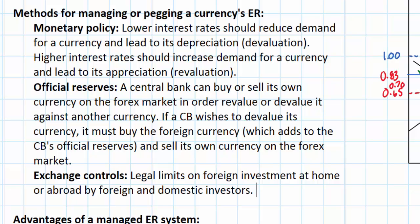By limiting investment in China, upward pressure on the value of the Chinese Yuan has been somewhat minimized. On the other hand, if a government wanted to keep its currency strong, it might limit the amount of investment done by domestic investors abroad. Large amounts of domestic investment abroad would increase demand for foreign currencies, reduce demand for the domestic currency, and increase the supply of the domestic currency in forex markets, causing it to get weaker. If a weak currency is deemed undesirable, the government can set limits on the amount of foreign investment abroad done by domestic investors.